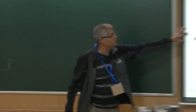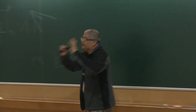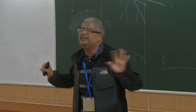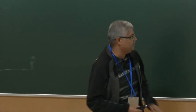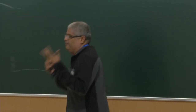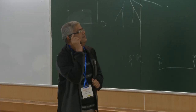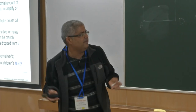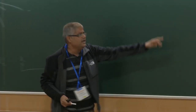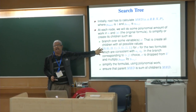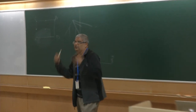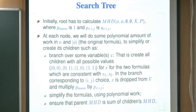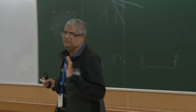At any node in the search tree we compute this formula, and when we recurse to children we ensure the parent MHD equals the sum of children MHDs. At each node we either branch over some variable (sometimes several variables at once to shorten the proof) and simplify the formulas in polynomial time, ensuring the correctness invariant is maintained throughout the induction.